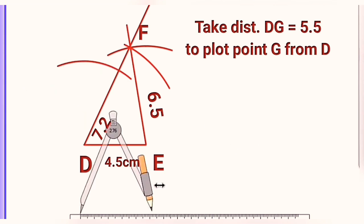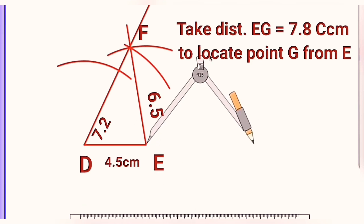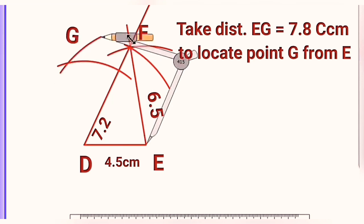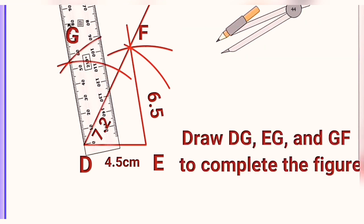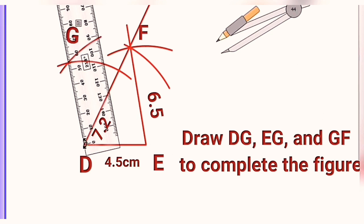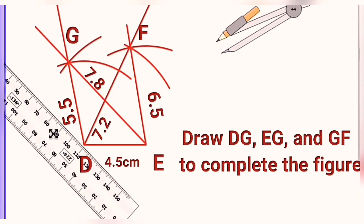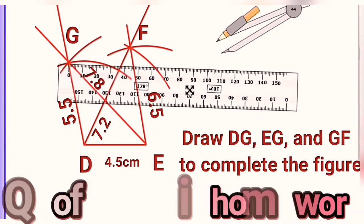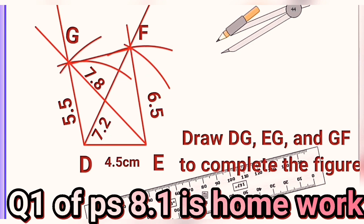To locate point G, take distance DG — 5.5 — then take distance EG — 7.8 — in the compass, keep the metal tip on E, and mark the location for point G. That intersection gives point G. Join points DG and EG — DG is a side, EG is the diagonal of the quadrilateral. Finally, join segment GF, which is the last side, and the quadrilateral is completed. Don't forget to mention the values of the sides in the diagram.